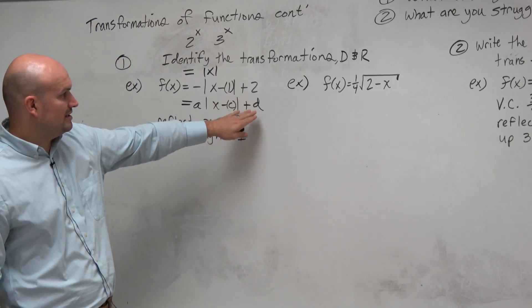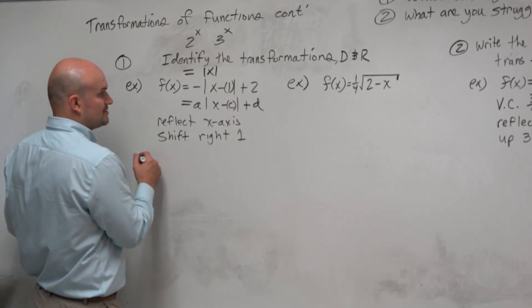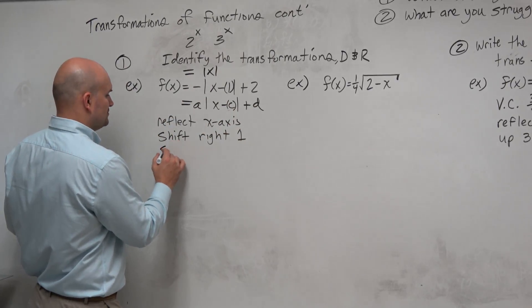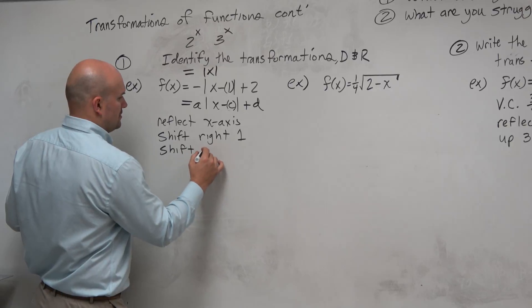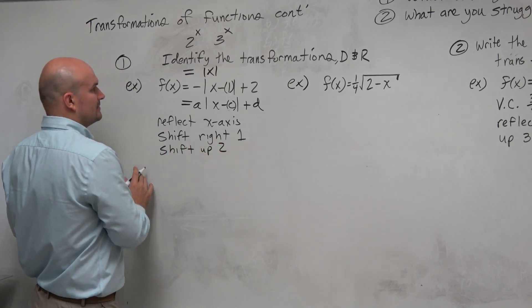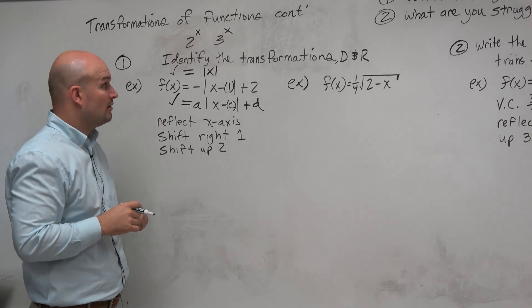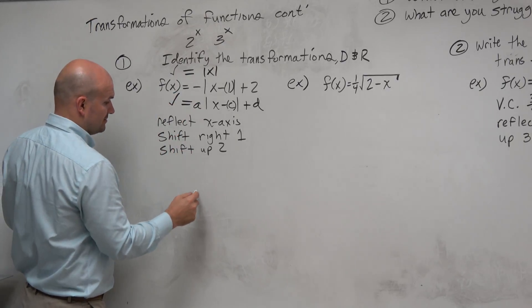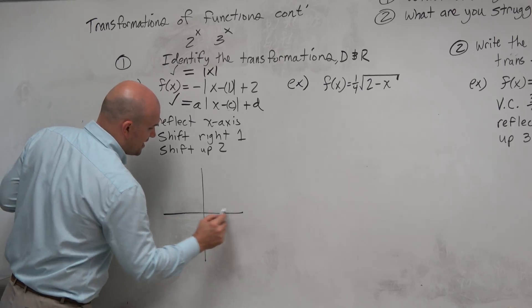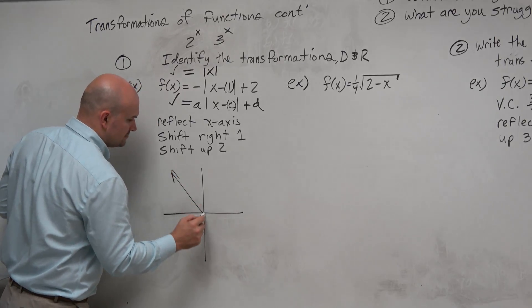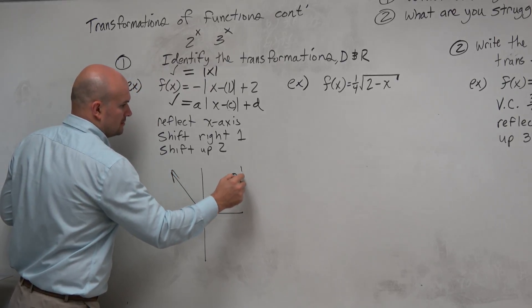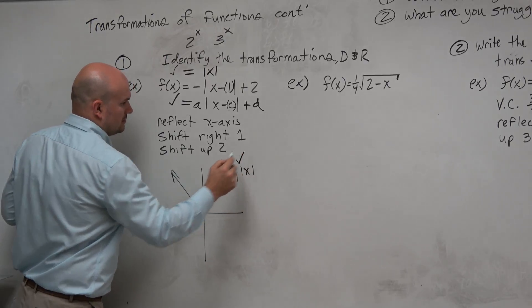And then we can see we have a plus 2 on the outside, which is d. So that's going to be shift up 2. So we should know that. The third thing we should know is, what does absolute value of x look like? Well, the absolute value graph is the v-shaped graph.